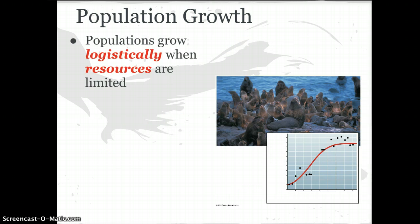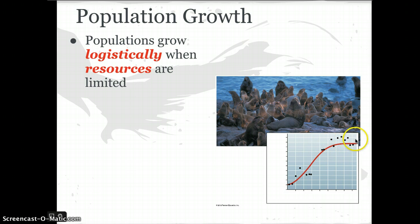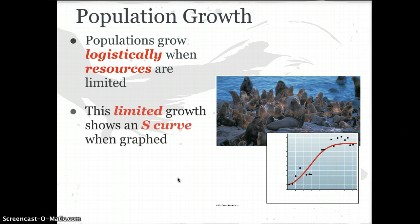Eventually, that exponential growth isn't going to continue. Most populations are eventually limited by some resource. You can see the initial J curve or quick growth, and then we call this logistic growth, where it eventually evens out. This is when resources become limited or the population size has reached what the environment can support. Limited growth is called an S curve or a logistic curve.